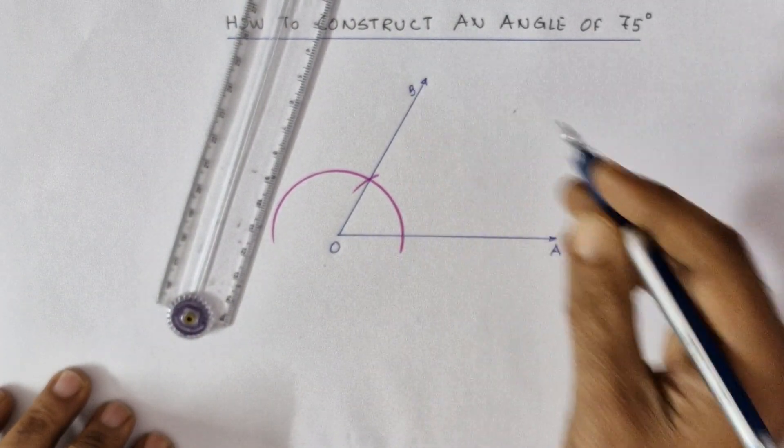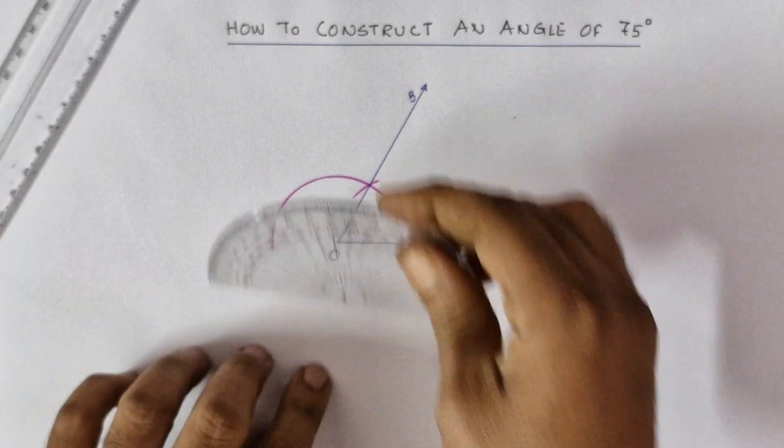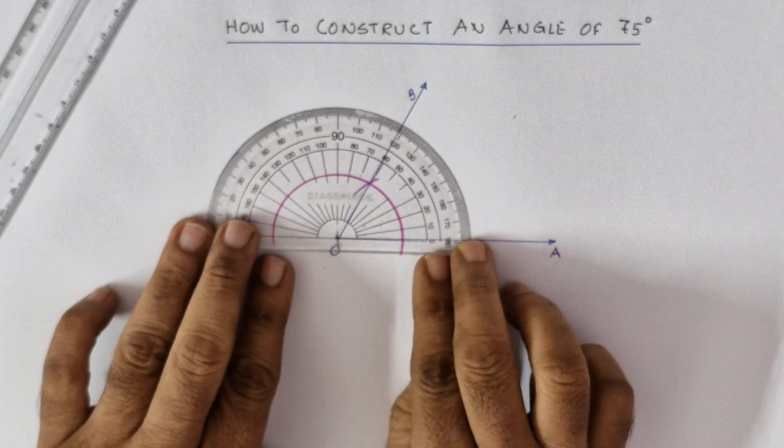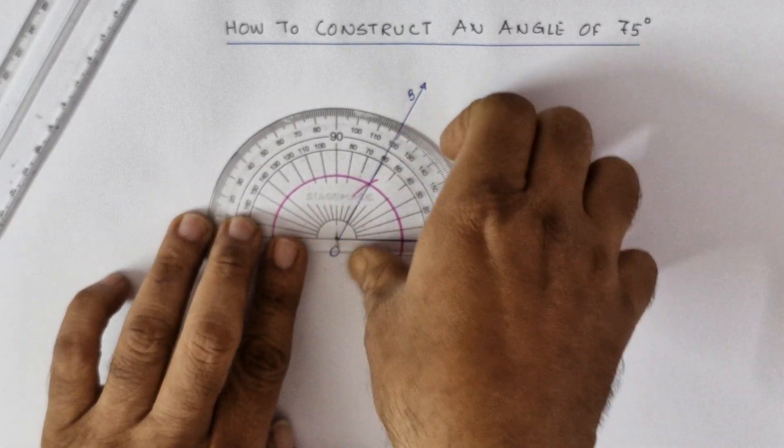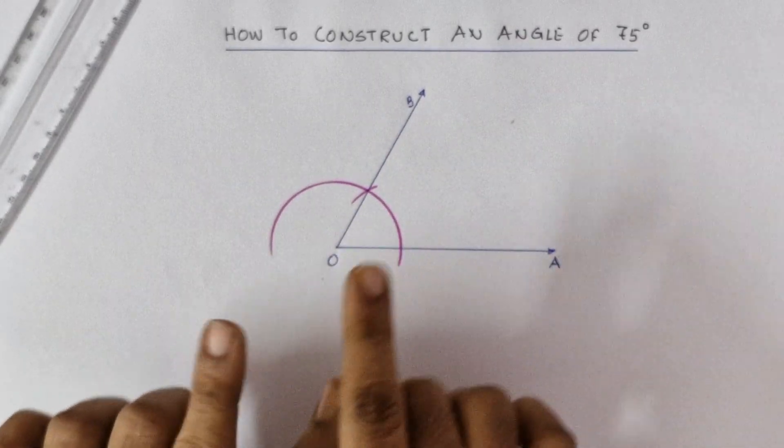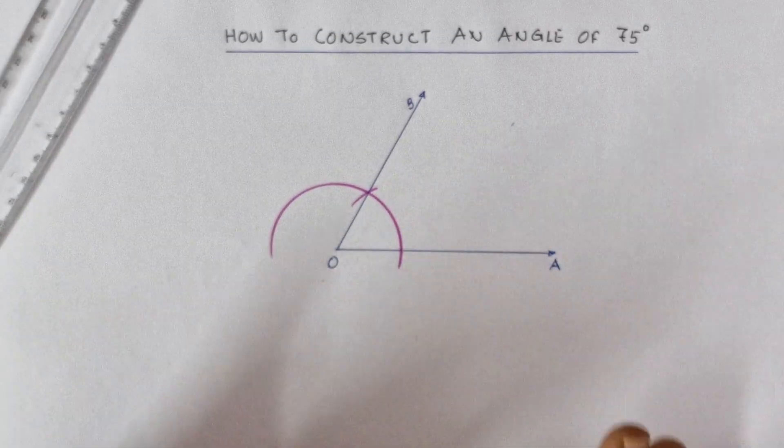So angle AOB is 60 degrees. Let's check it out whether we have constructed it correctly or not. See, it's 60 degrees, right? So first of all you need to construct an angle of 60 degrees.